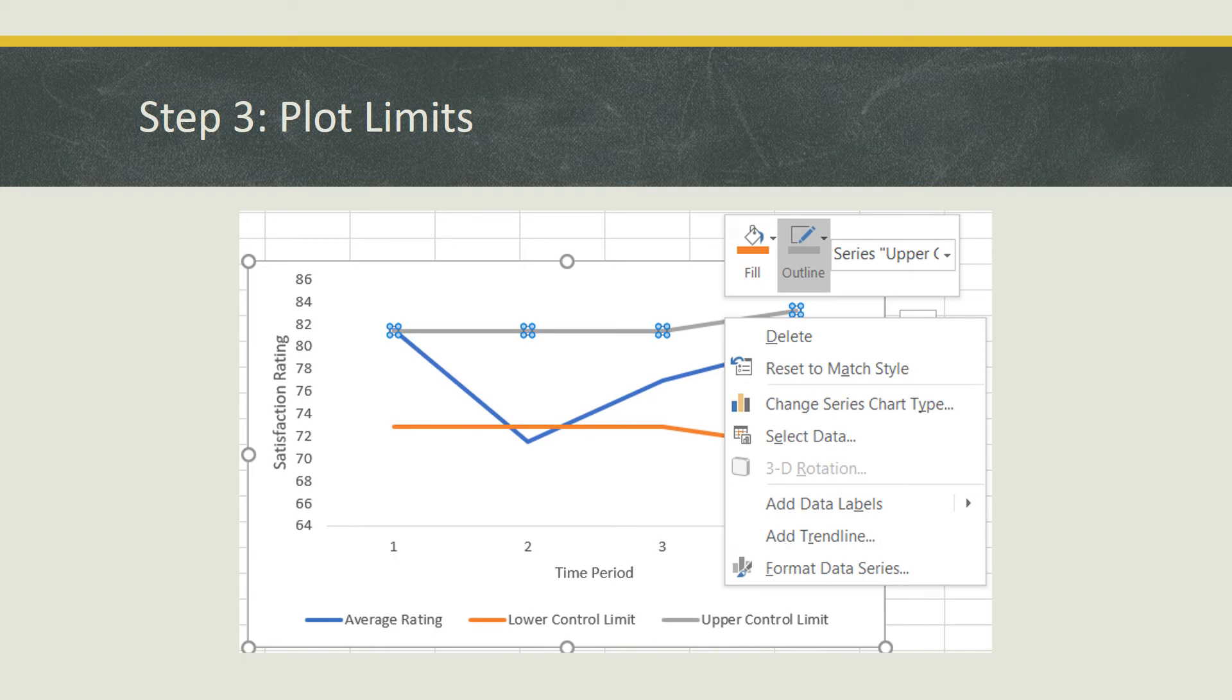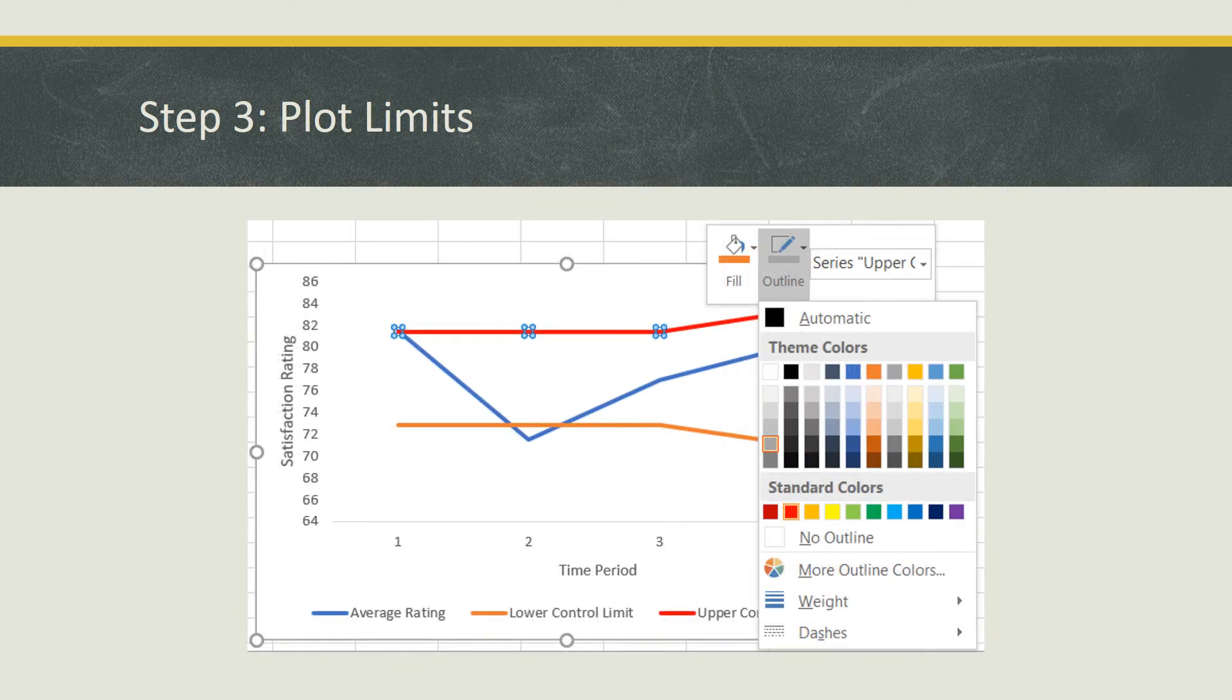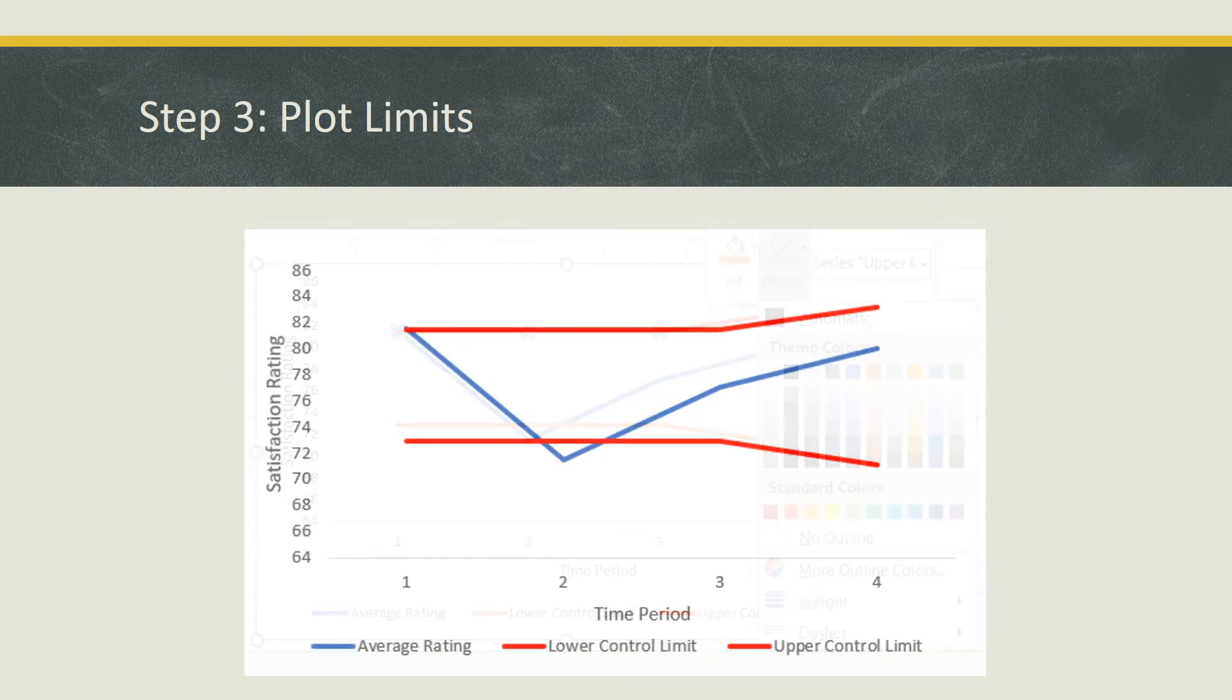Now we just need to make some more minor edits to clearly show data points and better differentiate between the lines. These changes can be made by right clicking on the line you would like to alter and clicking on outline. Once you do that, you should see a selection of different options to choose from. Go ahead and change the lines to whatever color you would like the limits to be displayed as. In this case, I did choose red and I will do the same for the lower control limit. And once you do this, you should end up with something similar showing the average rating and the lower and upper control limits with their appropriate colors.